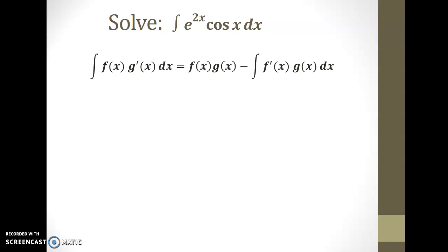Now what I've selected is e to the 2x as f and cos x as g prime, first because that's the order they appeared in the original integral, but also because differentiating f will involve the chain rule, which might be simpler than anti-differentiating e to the 2x, which would require a bit of substitution.